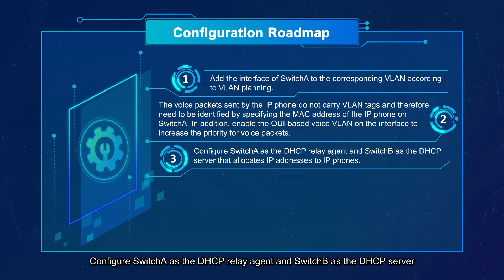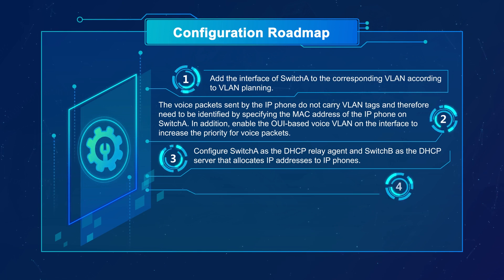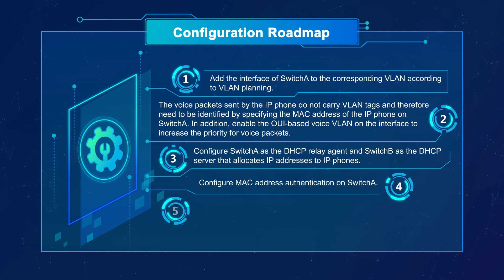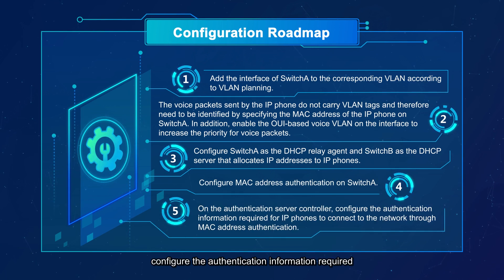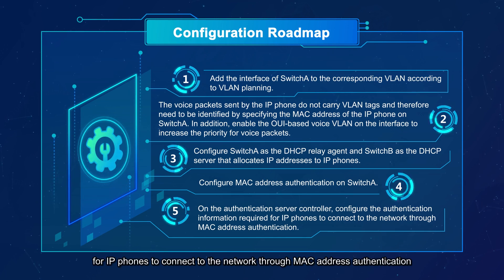Configure switch A as the DHCP relay agent and switch B as the DHCP server that allocates IP addresses to IP phones. Configure MAC address authentication on switch A. On the authentication server controller, configure the authentication information required for IP phones to connect to the network through MAC address authentication.